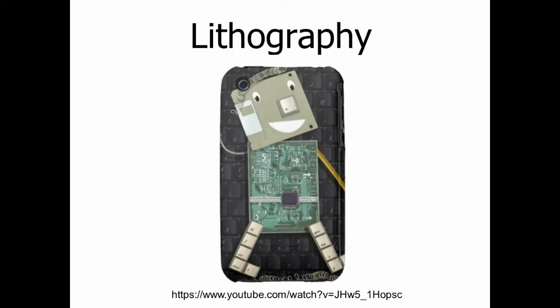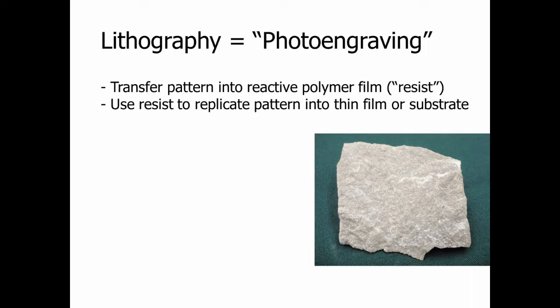Today we're talking about lithography. I've got a picture of this cute little guy because we're really talking about photolithography, which is the method they use to put small features on computer chips. The word 'lith' means stone, and lithography is really all about transferring a pattern of interest. They used to use limestone and would etch whatever they were interested in — a picture or words — into stone, covering the part of interest with a waxy layer and the rest of the stone with water.